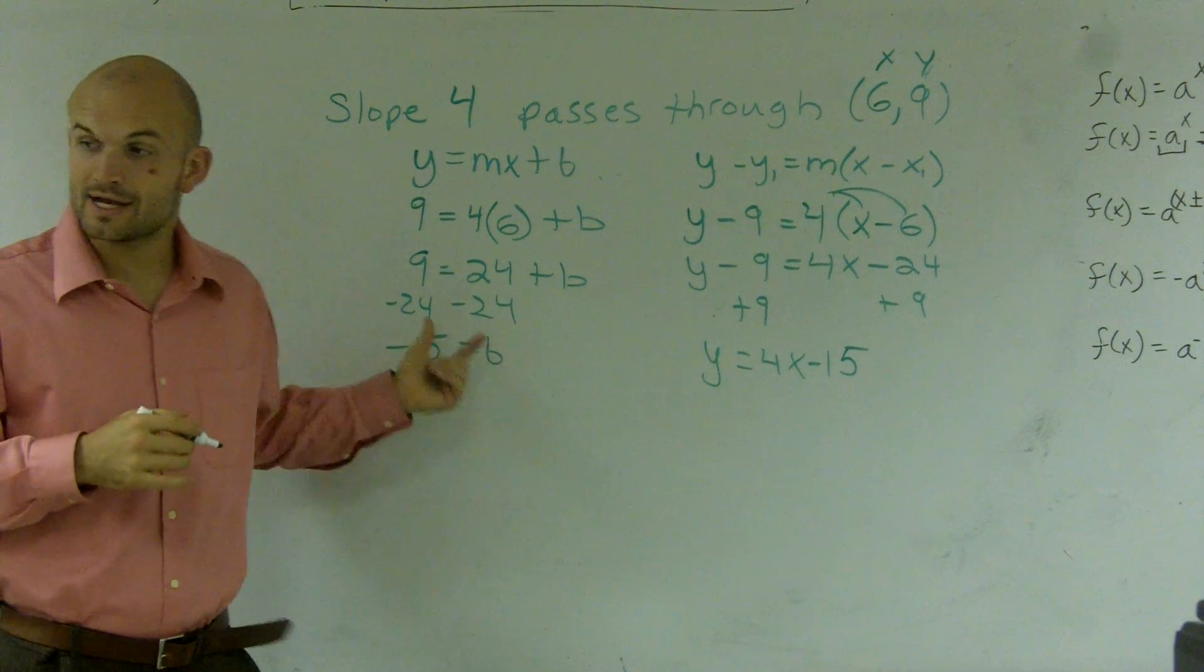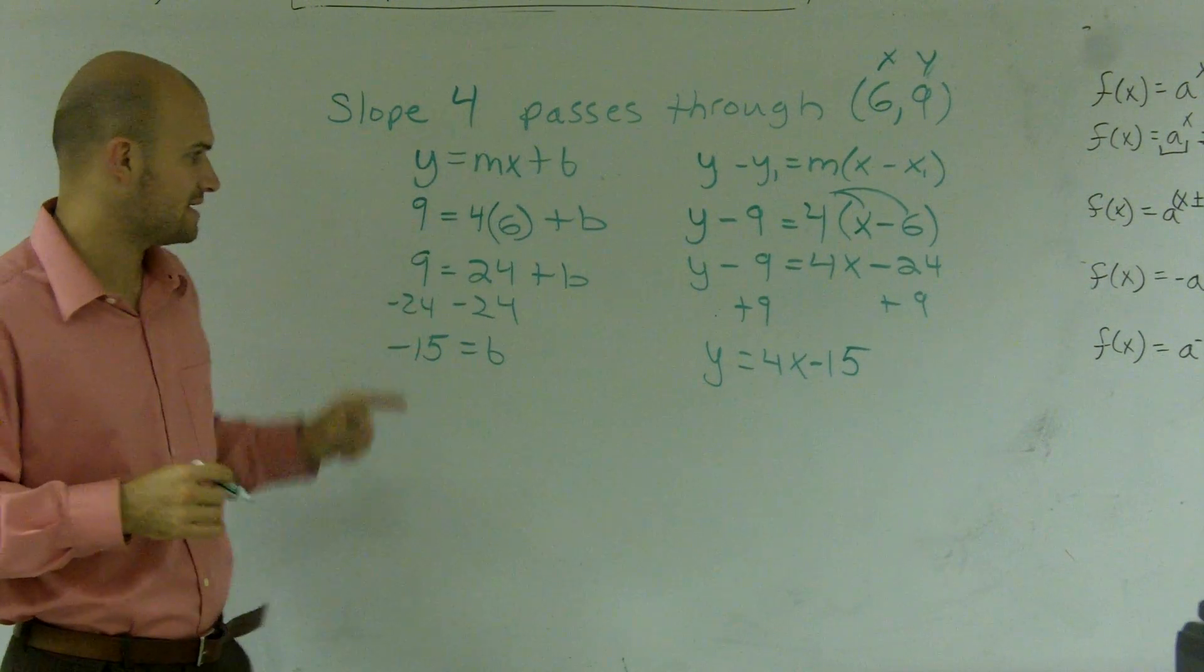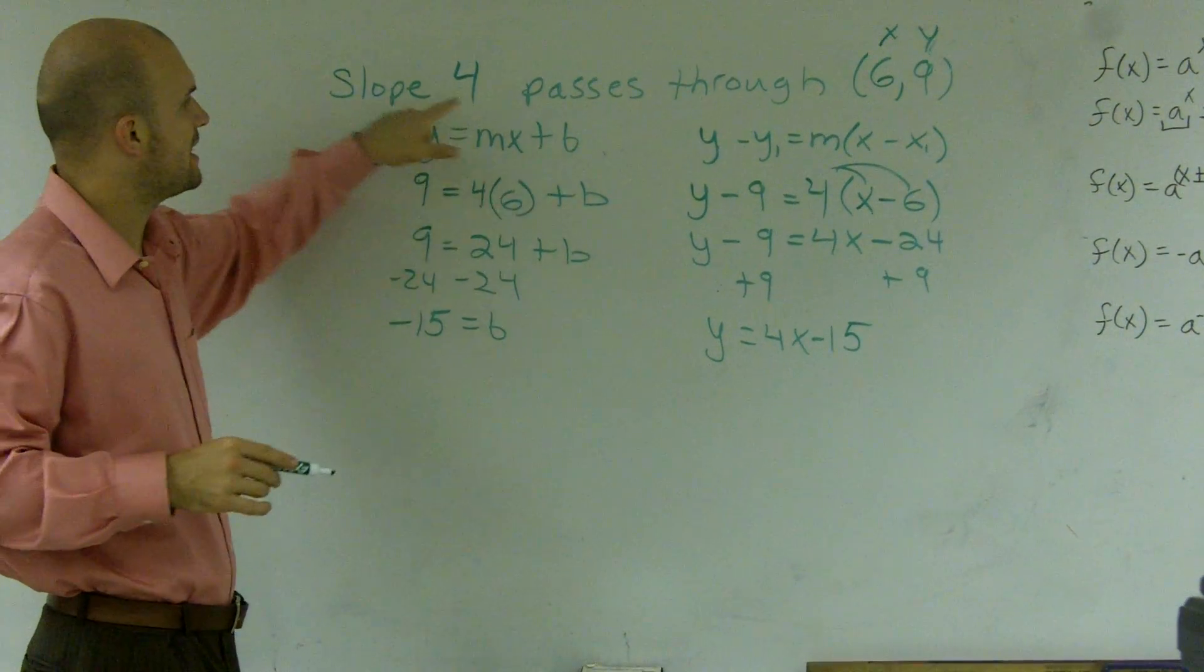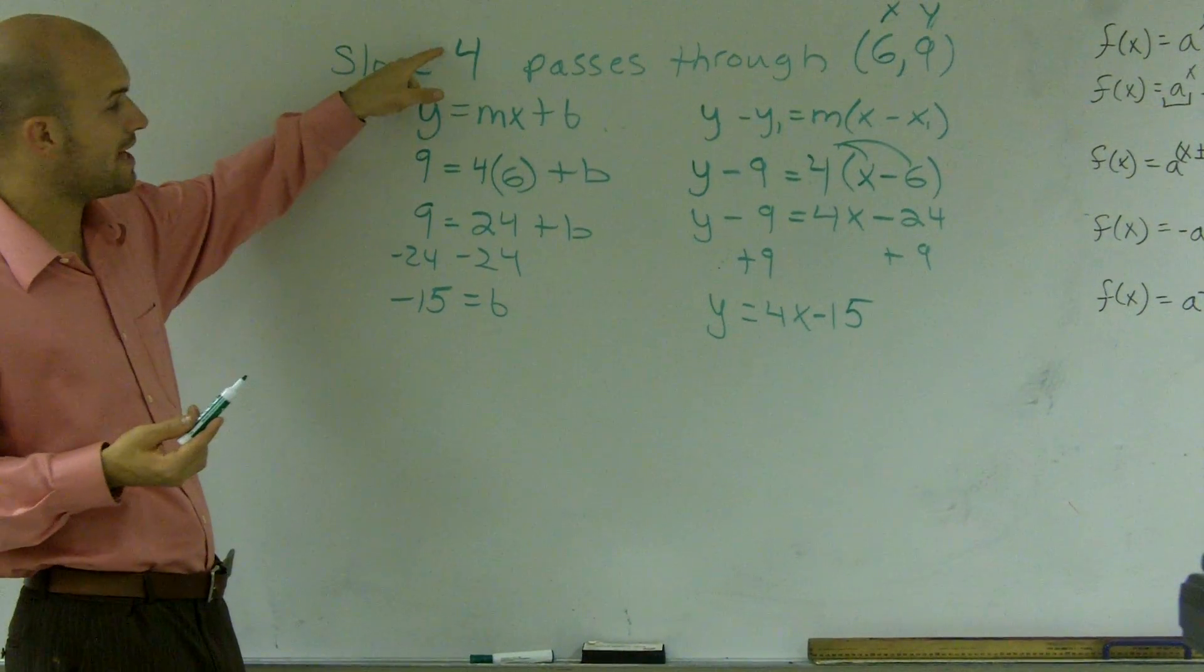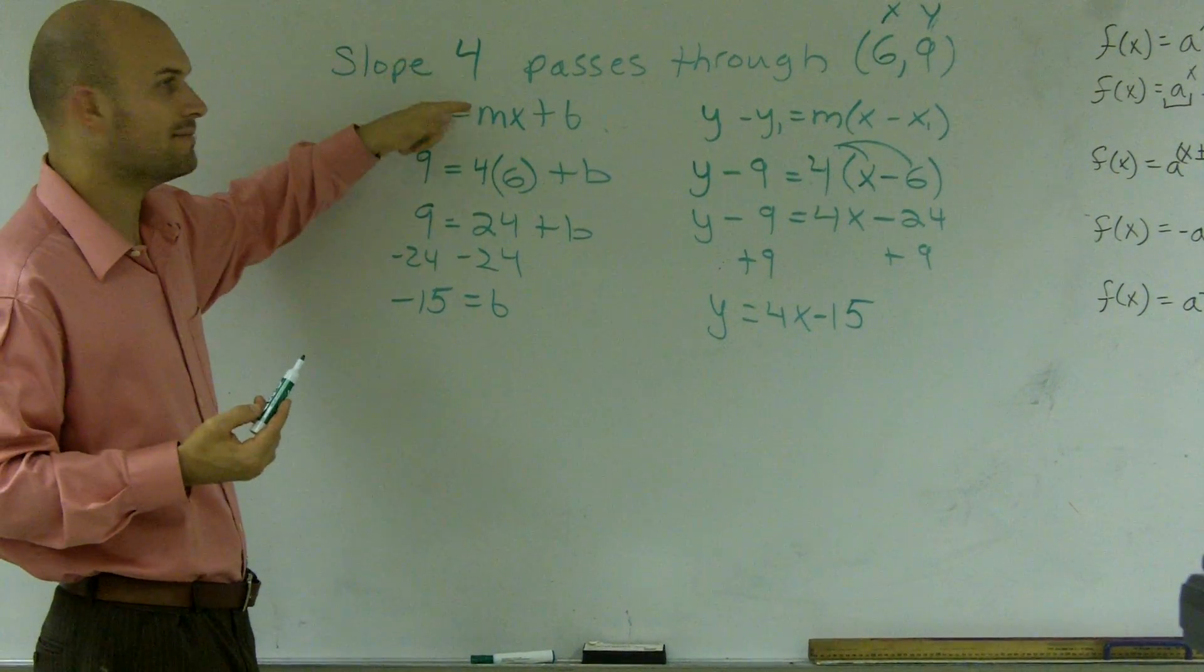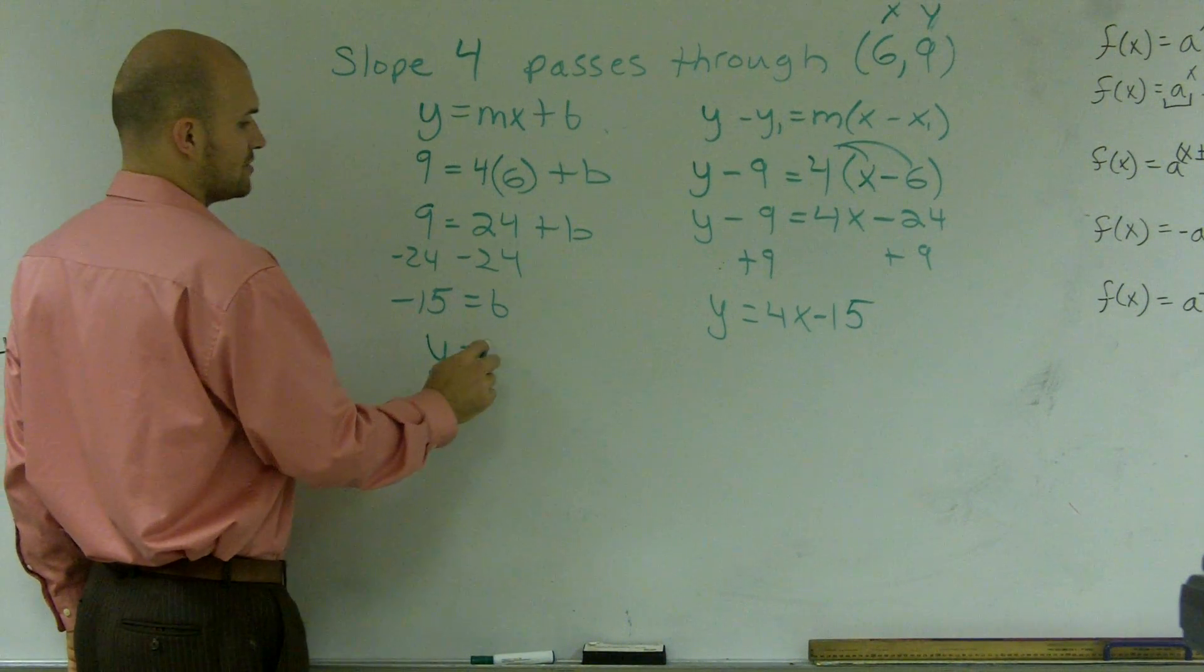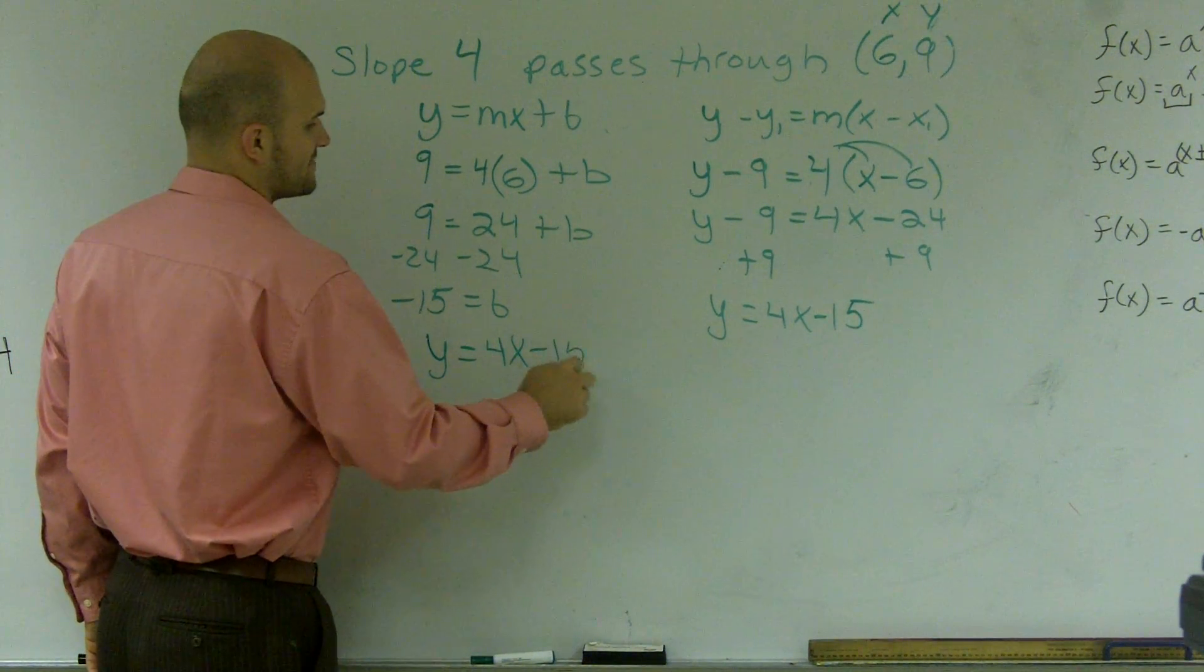Therefore, I know that my y-intercept, or my b, is negative 15. So now that I know that b is negative 15 and my slope m is 4, I can just write them into the equation: y equals 4x minus 15.